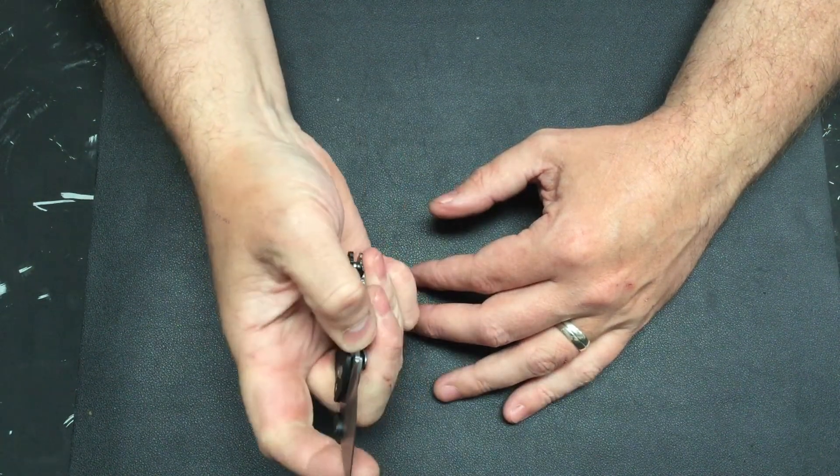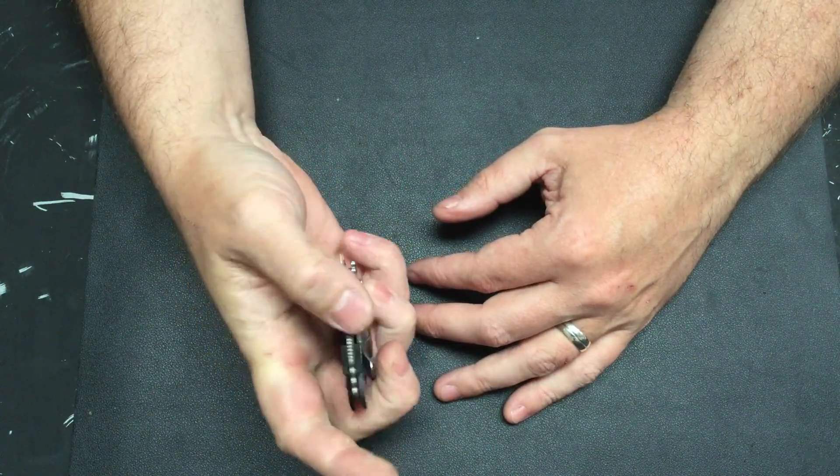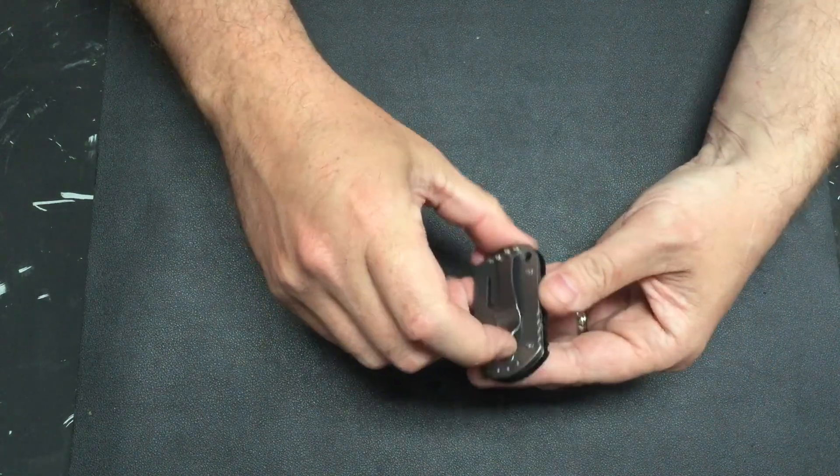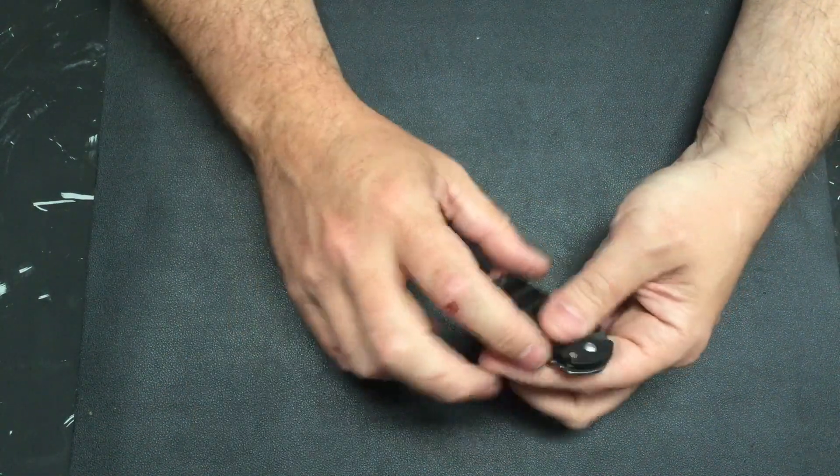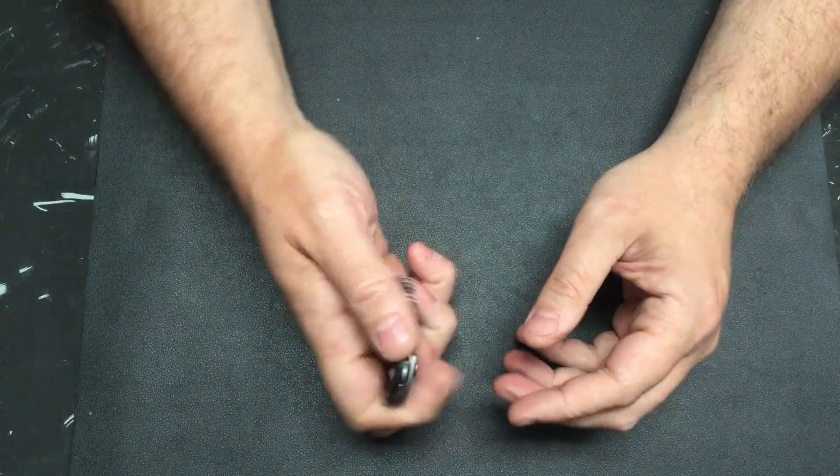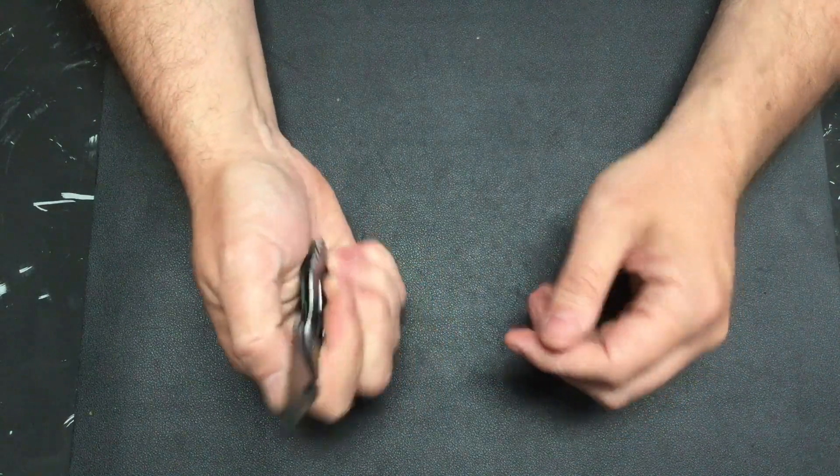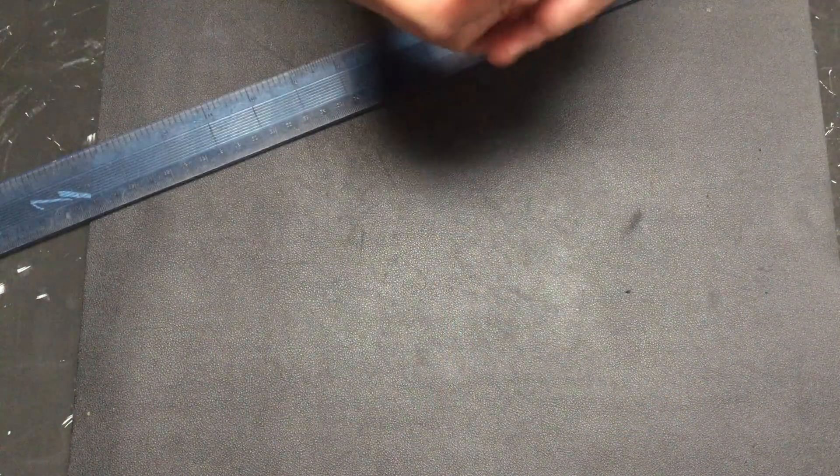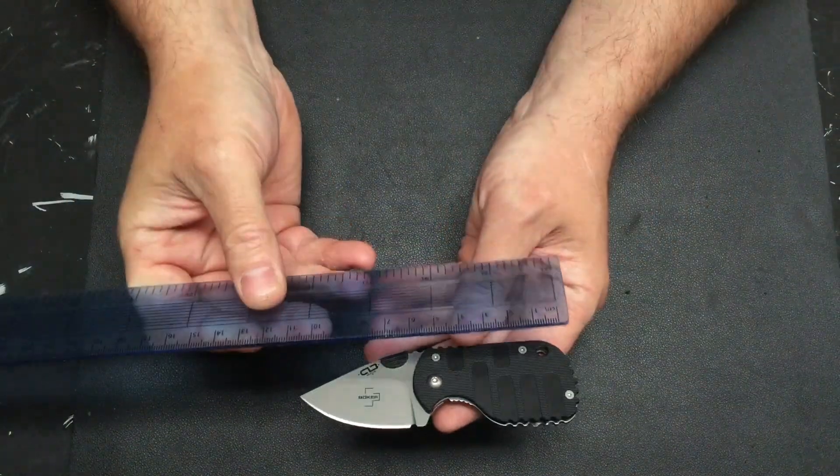right up on the back on it. Dual thumb studs, big pocket clip - can also act as a money clip or card holder. Let's do a couple of specs on it when it's open.